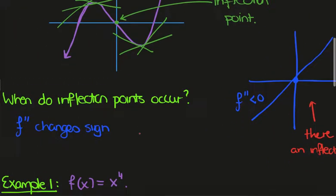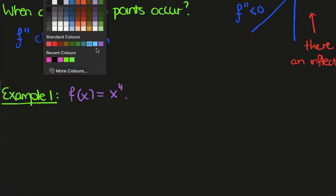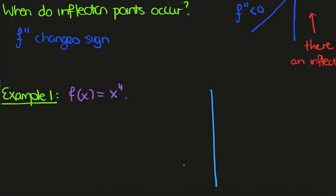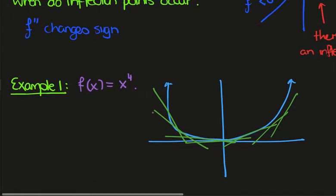Let's illustrate that with some examples. First, let's look at f(x) = x⁴. We can graph this function rather easily — it looks like a wide parabola. If we look at the tangent lines, they all lie below the curve; there's never a point where the tangent lines become above the curve.